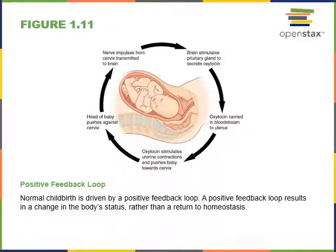A positive feedback mechanism is less common in the body but involves an effector producing a response that intensifies the original stimulus, causing the variable being regulated to move further away from its normal limits, which is destabilizing. An example shown here is childbirth, which is driven by a positive feedback loop where the head of the baby pushing against the cervix — the opening of the uterus — is detected by sensors that detect the stretching of the cervix.